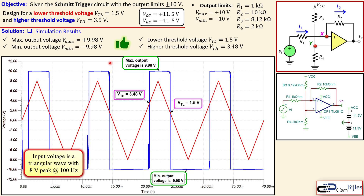This concludes our example of the Schmitt Trigger with asymmetric threshold levels in a non-inverting configuration. If you have any questions please let me know, and don't forget to like and share these videos so we can reach more people. Thanks for your cooperation and see you next time — take care.